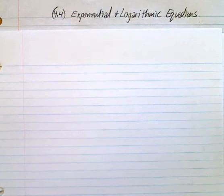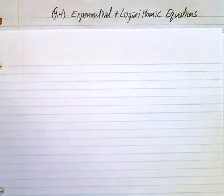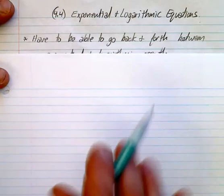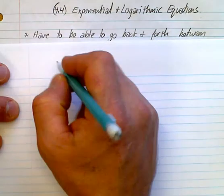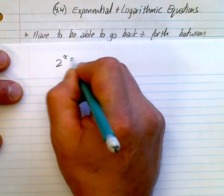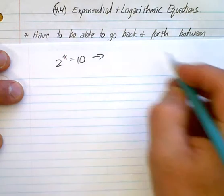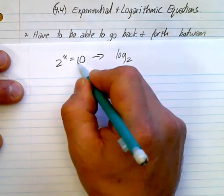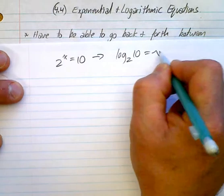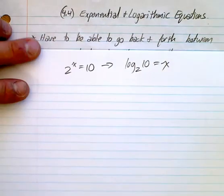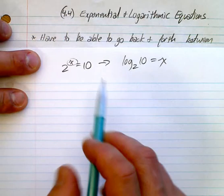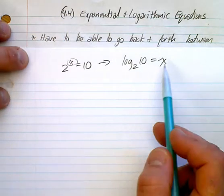Here we go — 0.4, logarithmic and exponential equations. Essentially, if you're going to be solving logarithmic equations, you're probably going to be solving exponential equations at the same time. So a couple of important things: you have to be able to go back and forth between an exponential function. For example, 2 to the power of x is equal to 10. What you need to be able to do is convert this into log form: log base 2 of 10 is equal to x. This is how we solve for exponents — that's the whole idea behind logarithms.